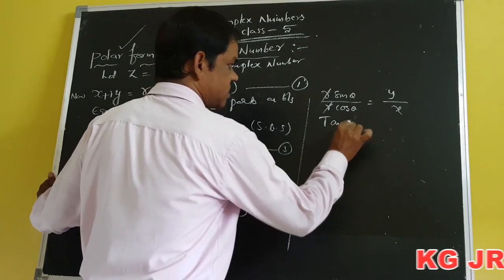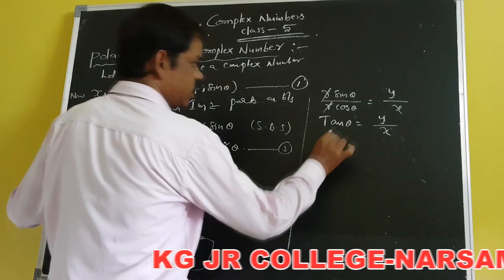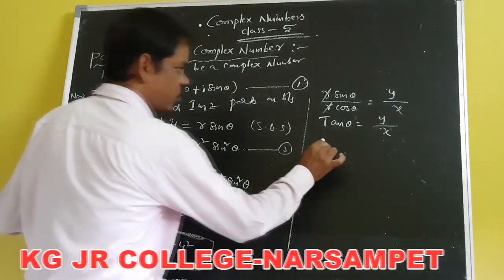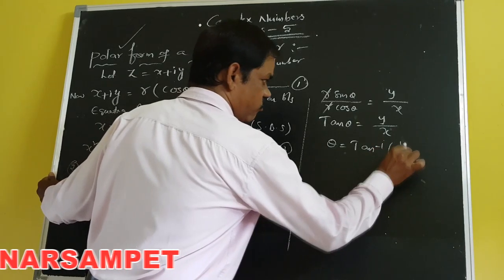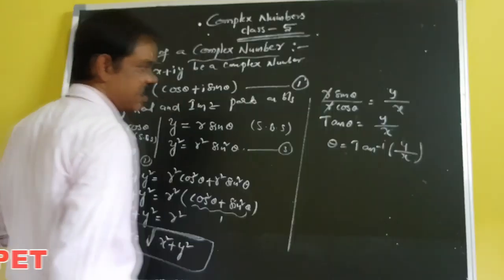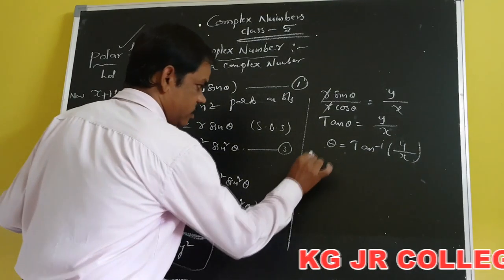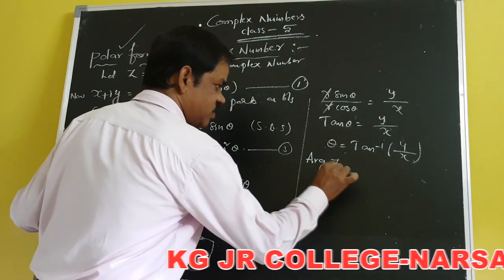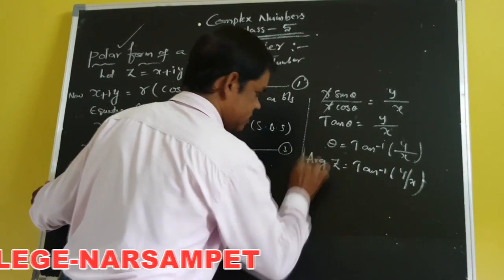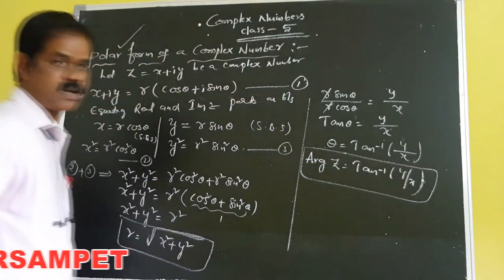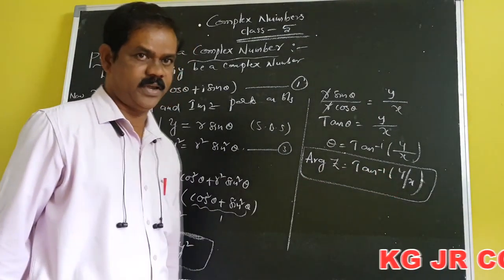So tan θ equals Y by X. Therefore, θ equals tan inverse of Y by X. This θ is called the argument of Z. Therefore, the argument of Z equals tan inverse of Y by X. This is the second key concept: θ equals tan inverse of Y by X.